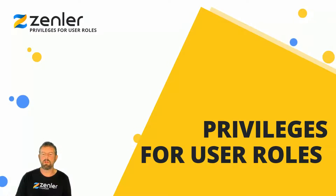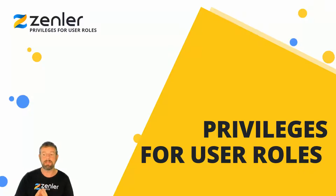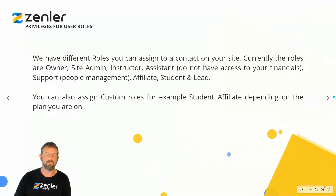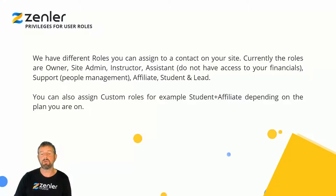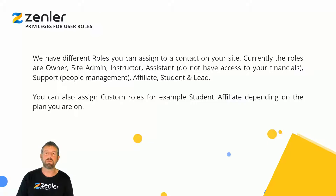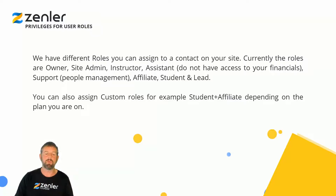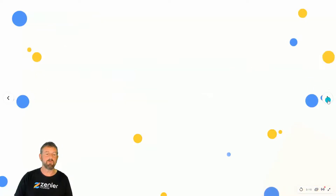In this workshop we're going to look at privileges for user roles — a question that's been asked about what access different user role levels get inside of Zendler. I've done a slide here and we're going to work through it. We have different roles you can assign to a contact on your site. Currently the roles are owner, site admin, instructor, and assistant. Assistants do not have access to your financials. You also have support, people management, affiliates, students, and leads. You can assign custom roles and have multiple roles in one depending on your plan.